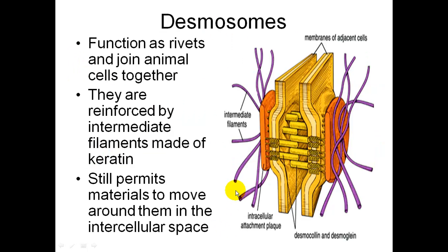Desmosomes function as rivets, gluing animal cells together. The membranes of adjacent cells are connected, and desmosomes are reinforced by cytoskeleton intermediate filaments made of protein or keratin. They still permit materials to go through them and into the intercellular space between the cells.